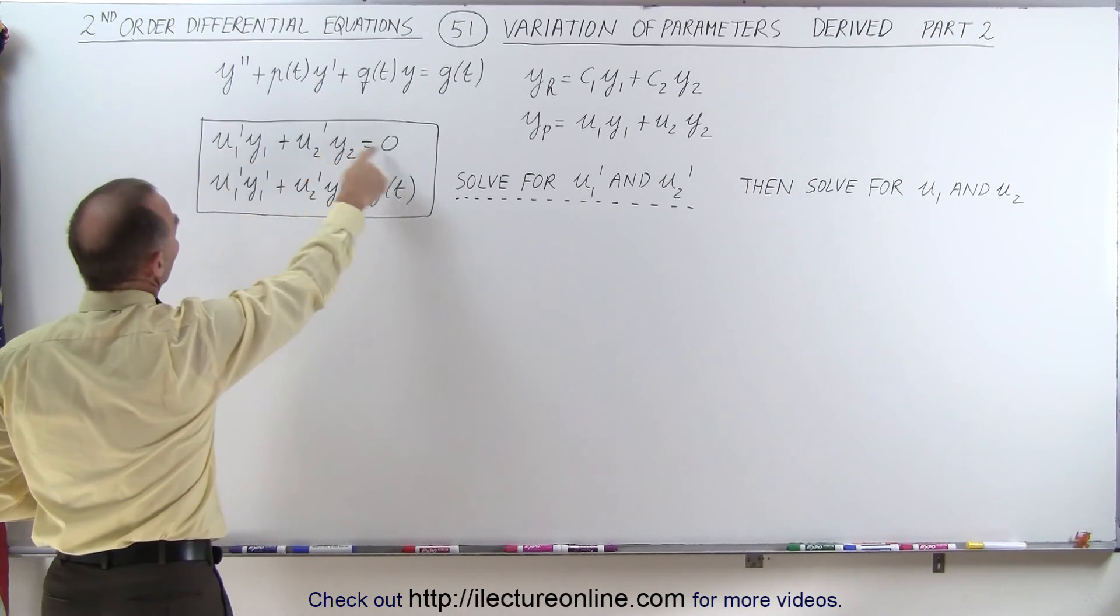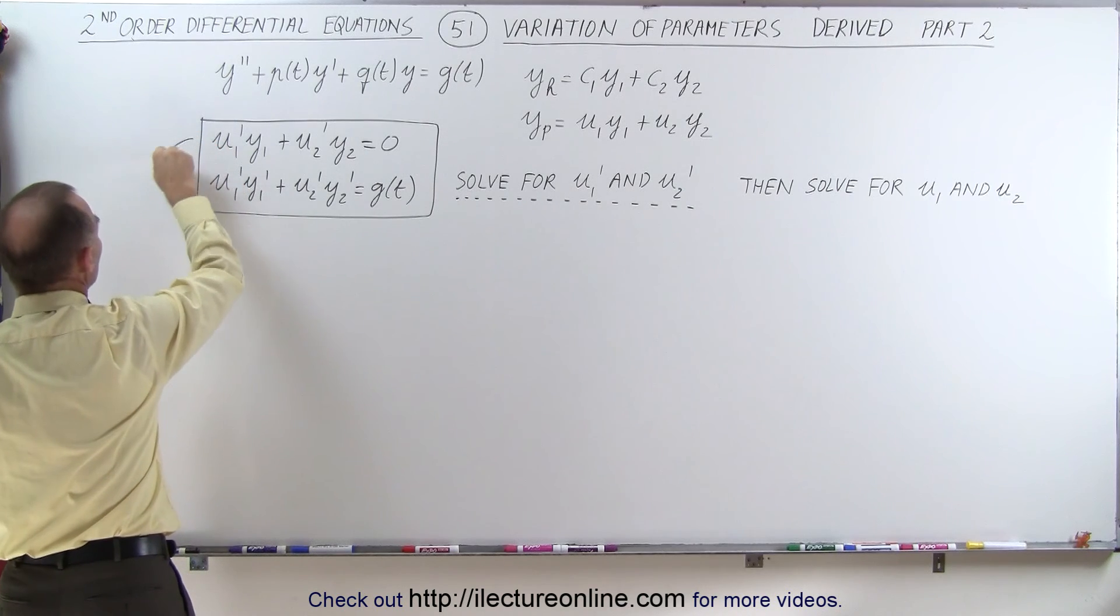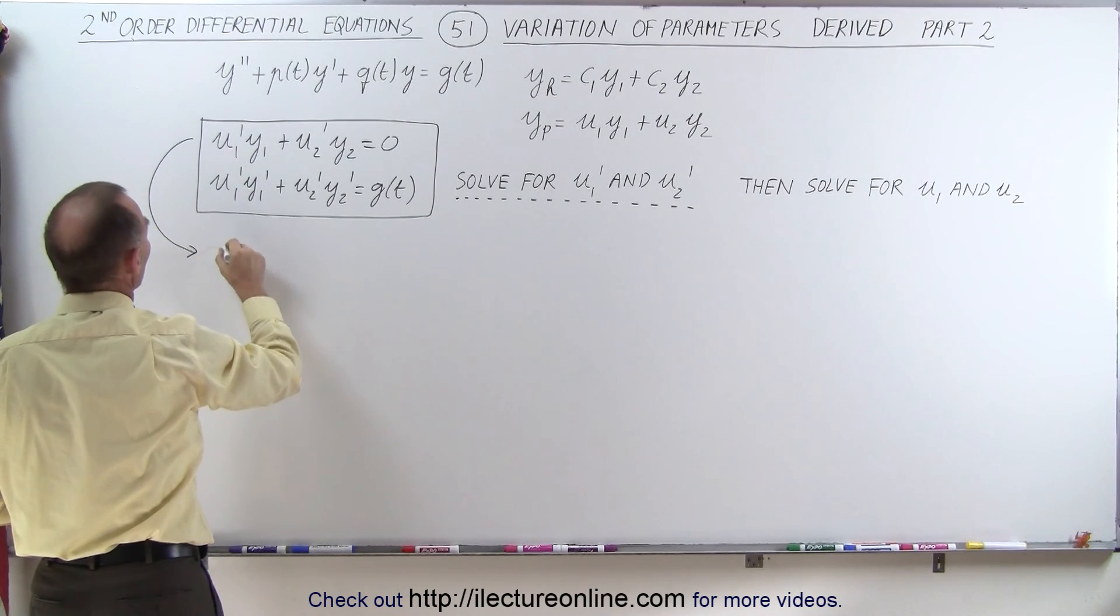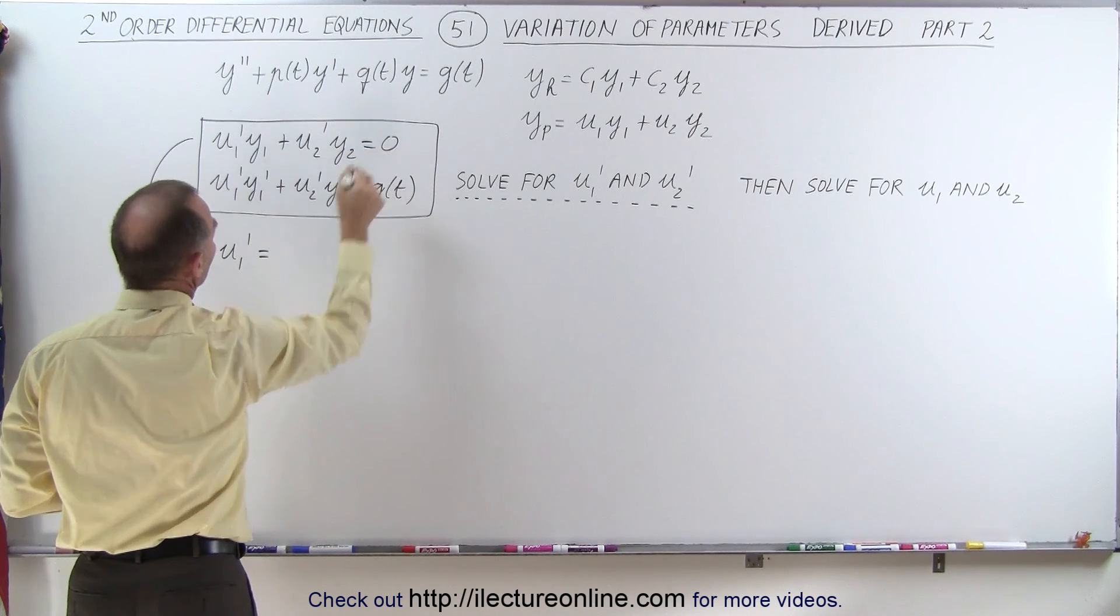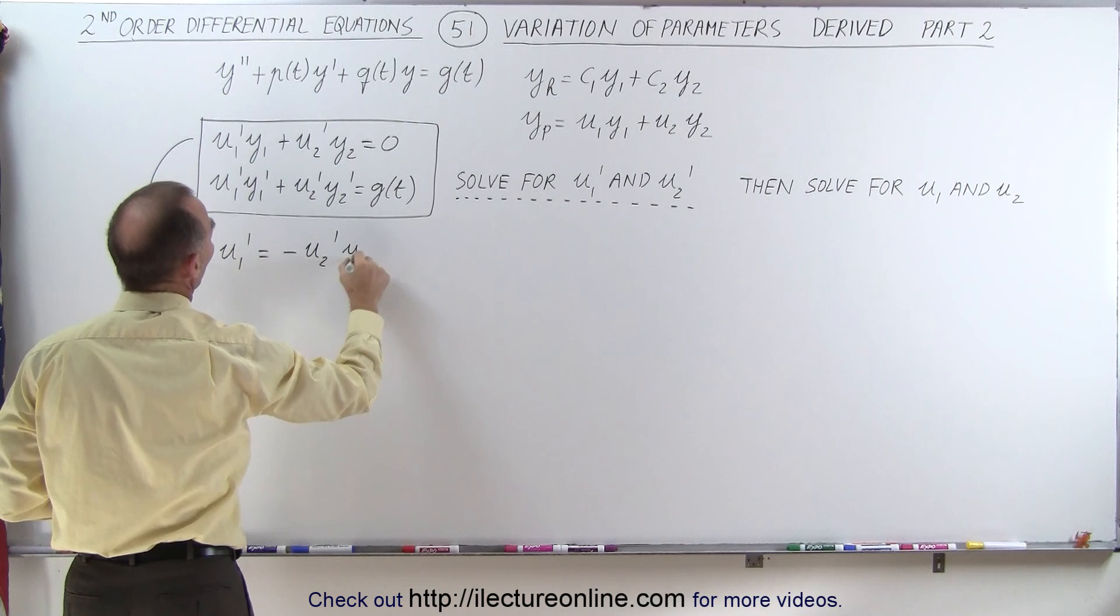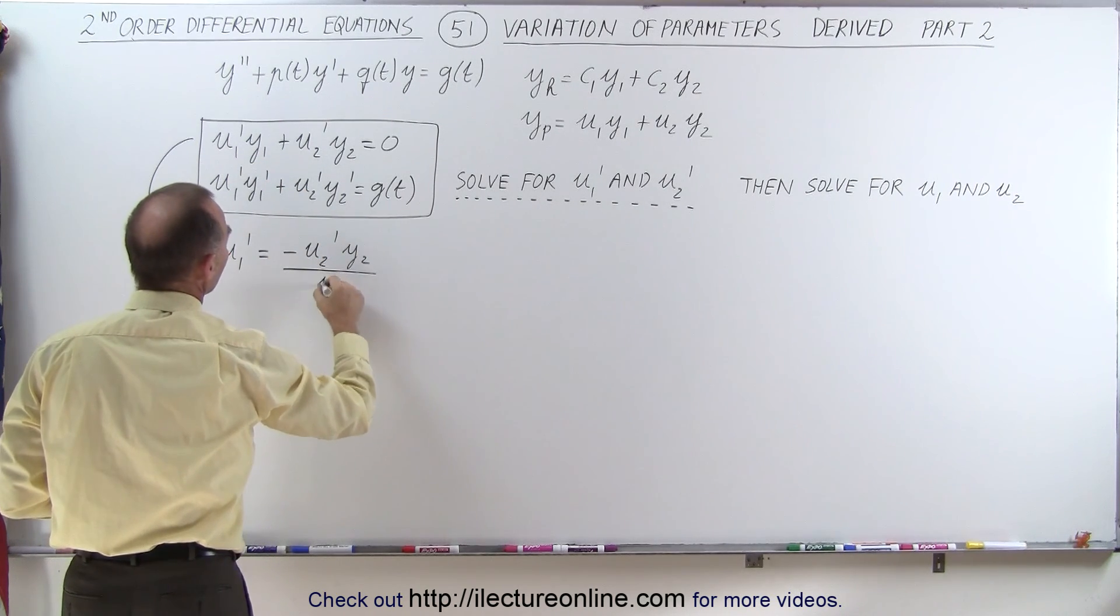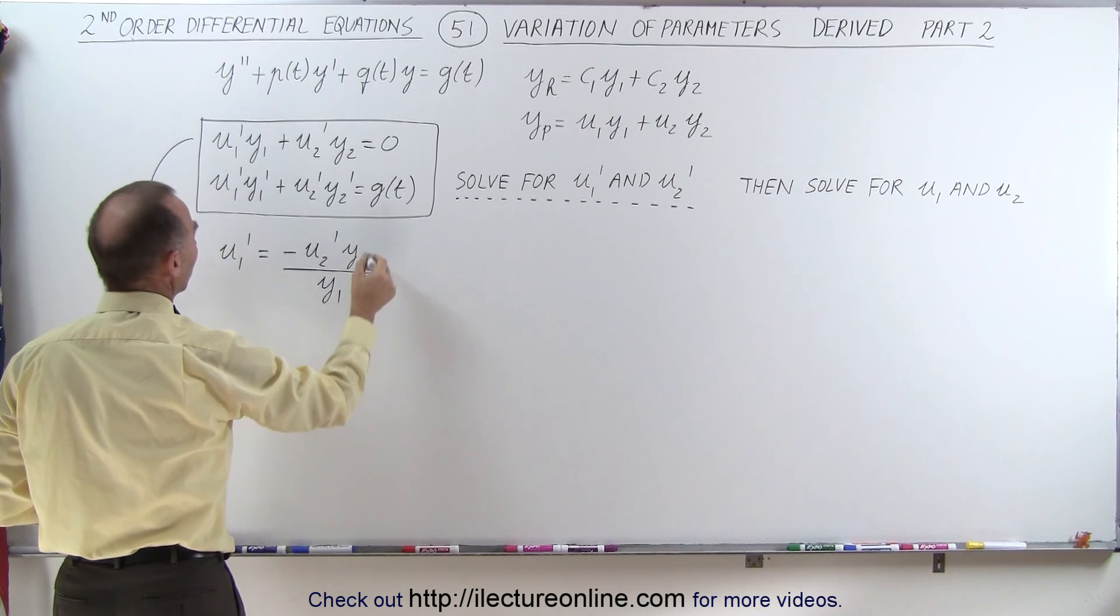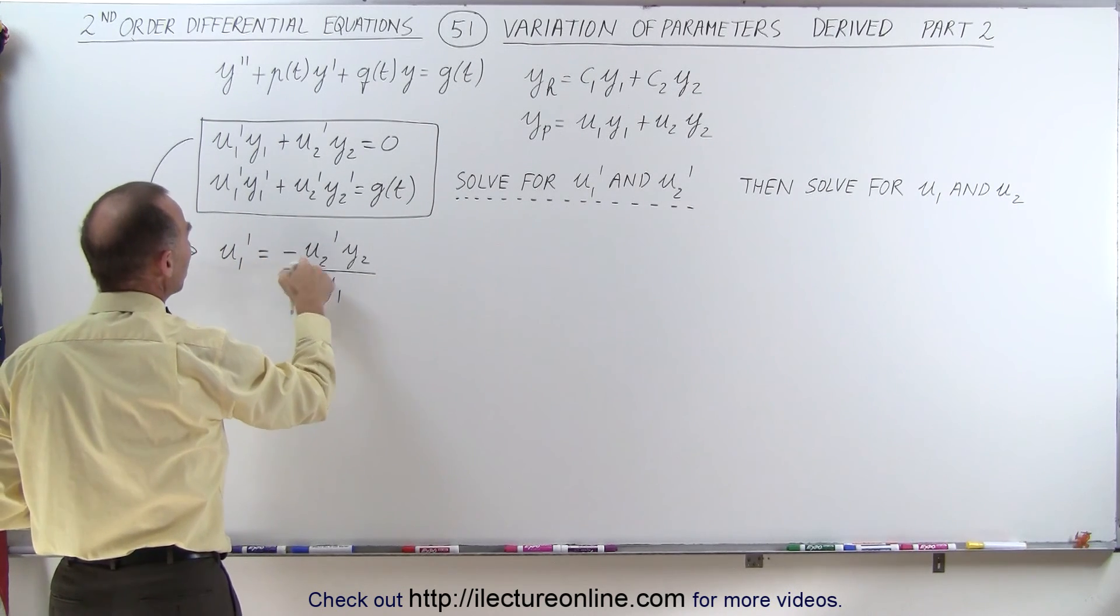So what we're going to do is we're going to take the first equation and solve this for u1'. When we do that, we get the following: u1' is equal to, moving this to the right side of the equation, that would be minus u2' y2, and divide both sides by the coefficient, so divide by y1. So here we have the value for u1' in terms of u2'.